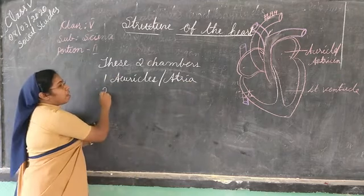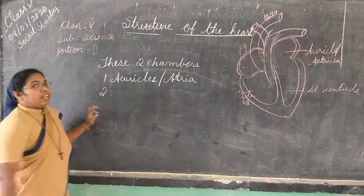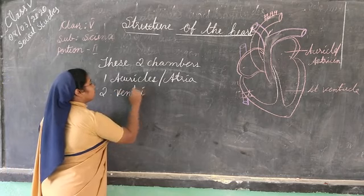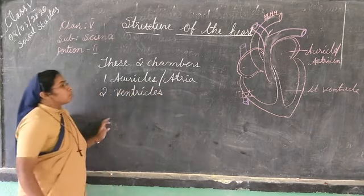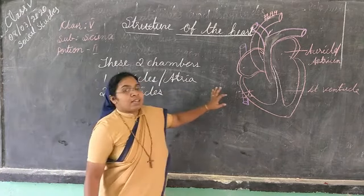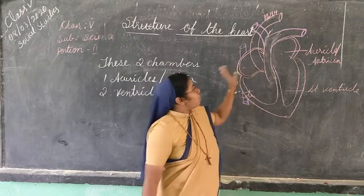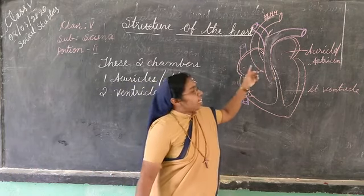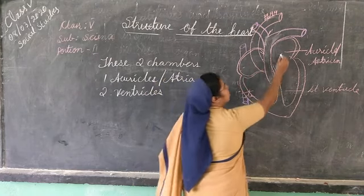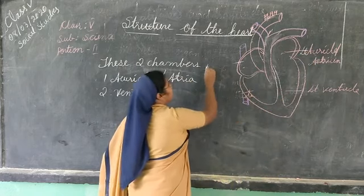The first chamber is auricles, and the second chamber is ventricles. Dear friends, these auricles are present at the top of the heart. This is the left auricle and this is the right auricle.